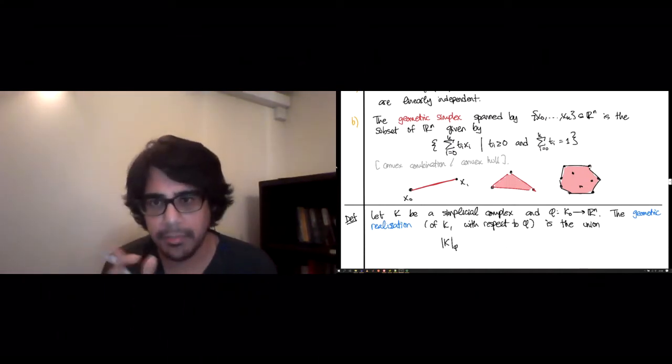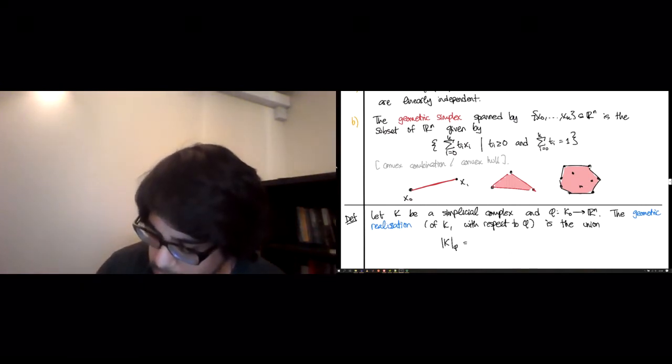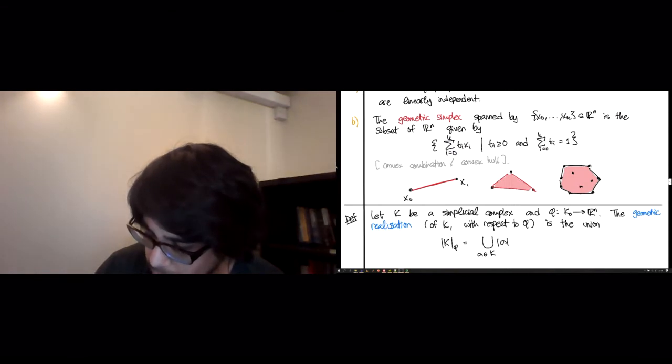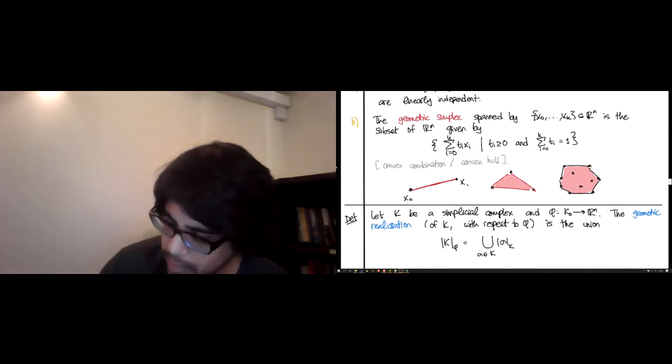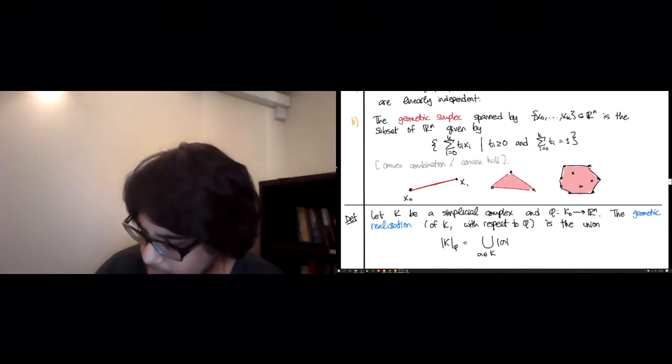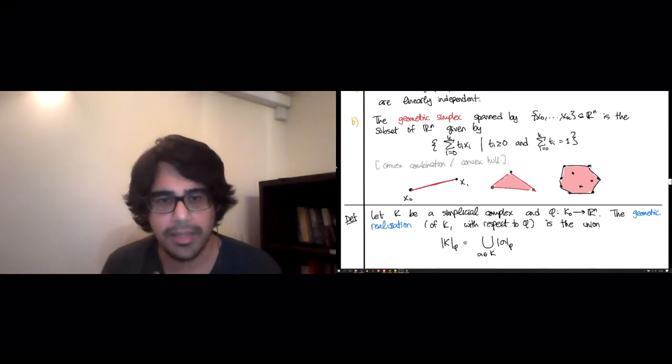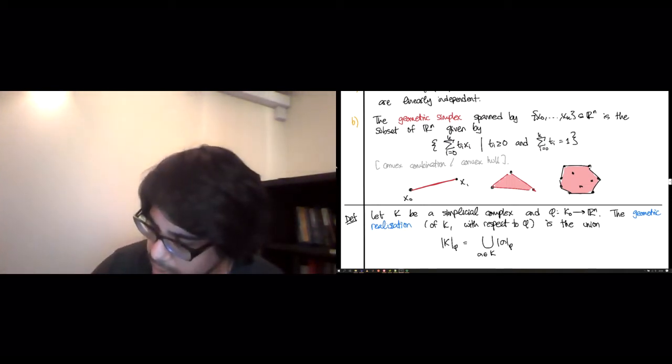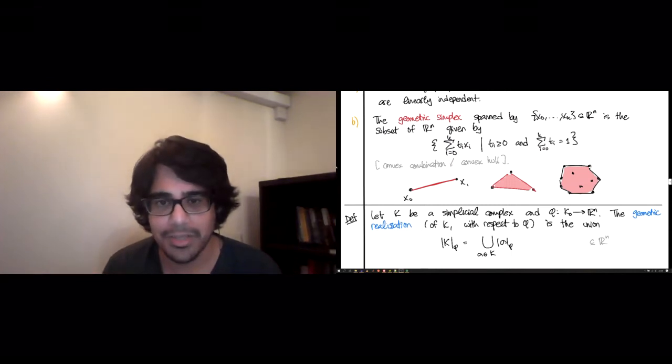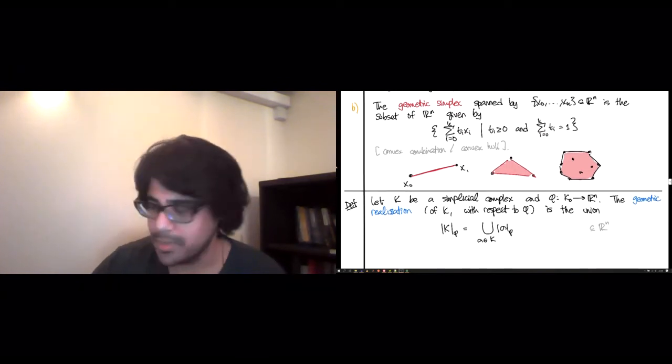And then I'll put a phi to indicate that it depends on this function taking your vertices to Rn. So this is going to be a union over all the simplices in k, not just the vertices, of something that I'll call sigma sub phi. So this is something that depends on phi, and it depends on the simplex sigma, and then k is a union of these. And this is going to be a subspace of Rn. So really, I've said that this is some subspace of Rn, that's a union of these tinier pieces that are indexed by the simplices.